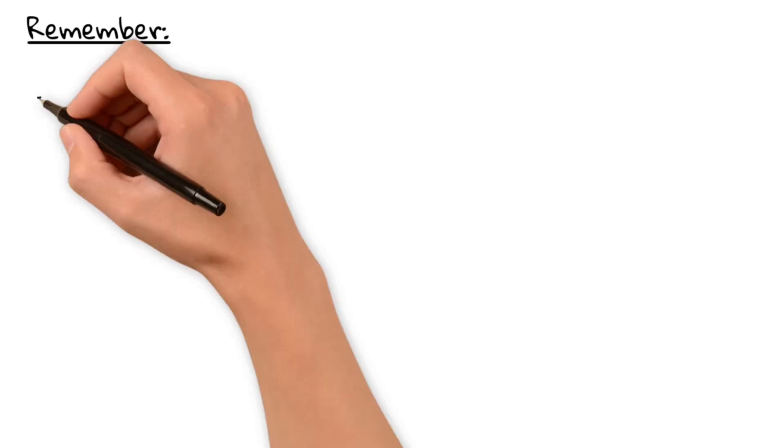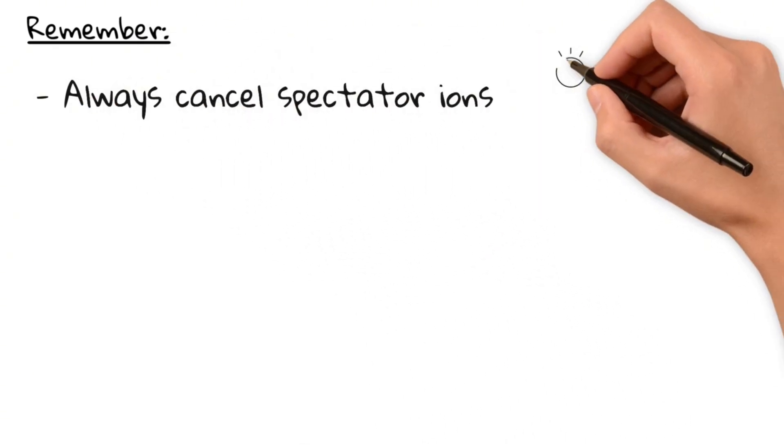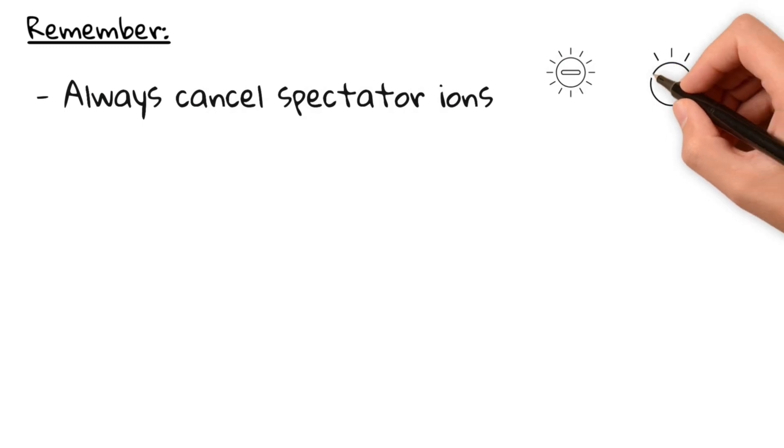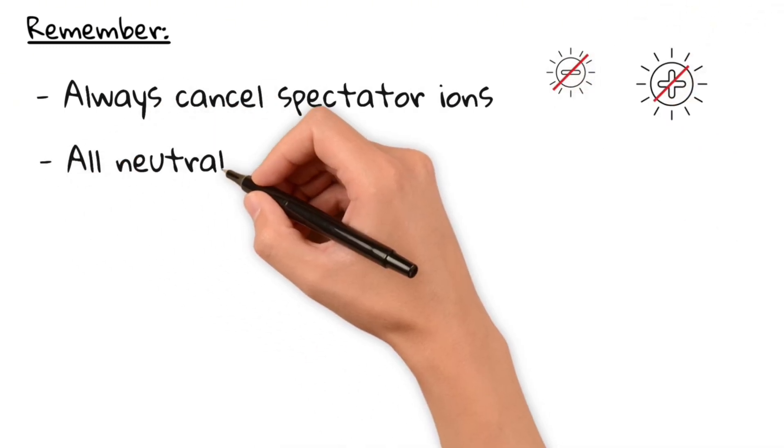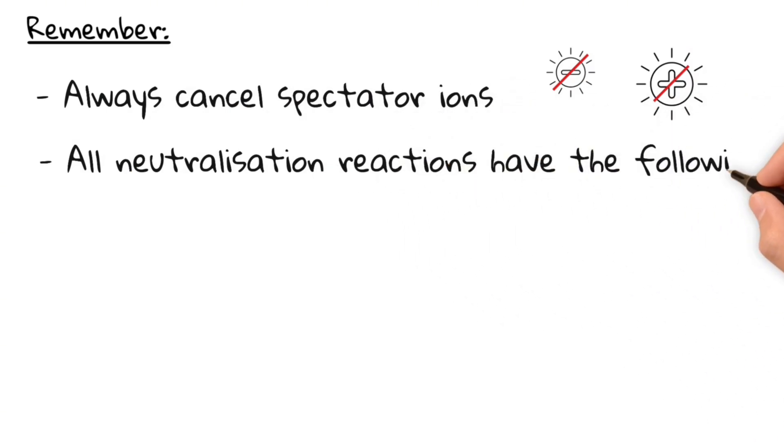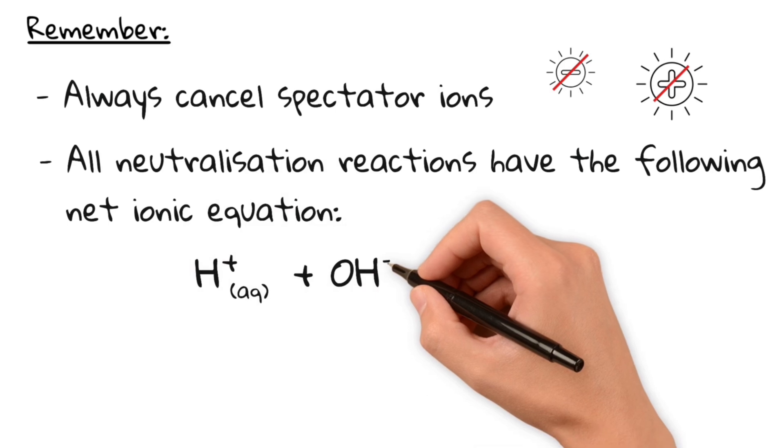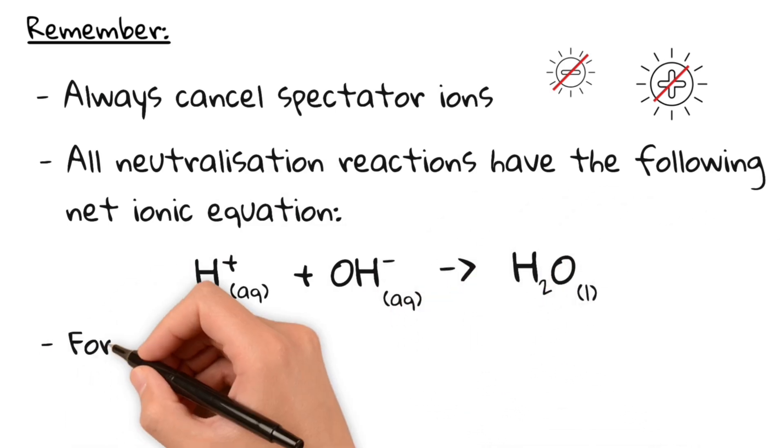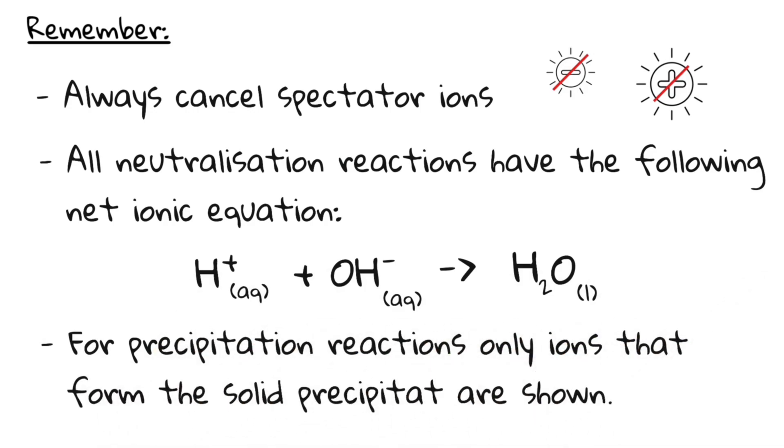Let's recap. Net ionic equations do not contain spectator ions. Those are the ions that appear on both sides of the chemical reaction. For any neutralization reaction, the net ionic equation always is H-plus plus OH- reacts to water. For precipitation reactions, only ions that actually form the solid precipitate are shown.